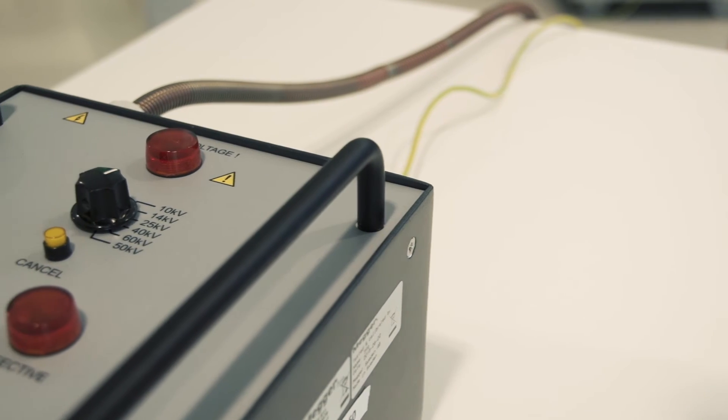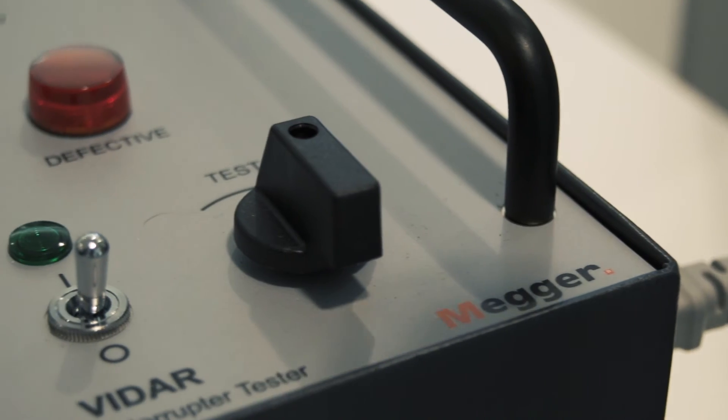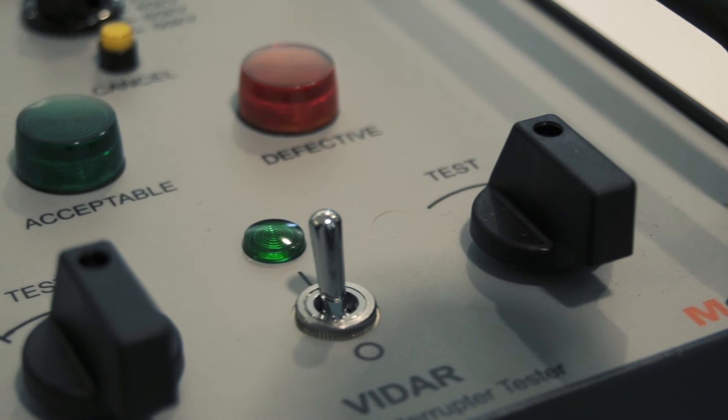Set the test voltage selection switch of VIDAR to the voltage nearest to the desired test voltage given in the circuit breaker manufacturer's specification.